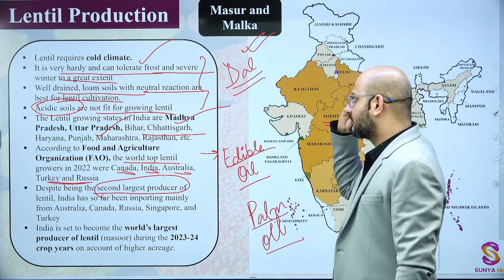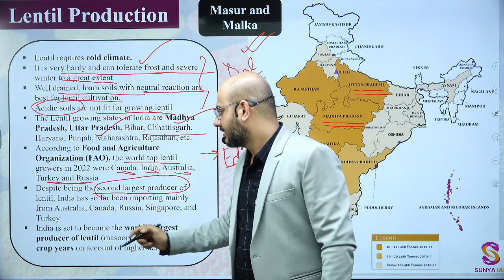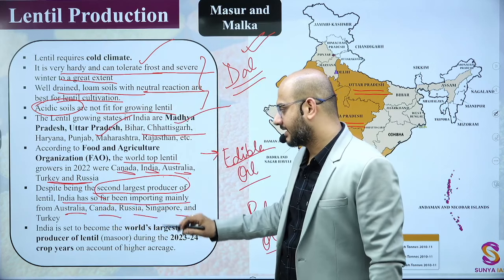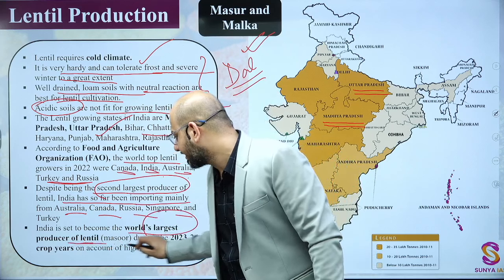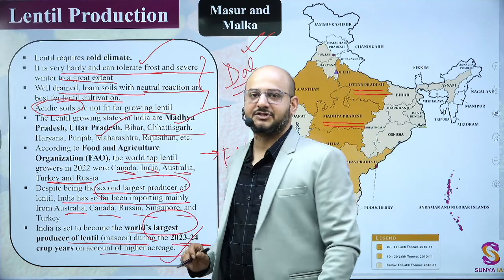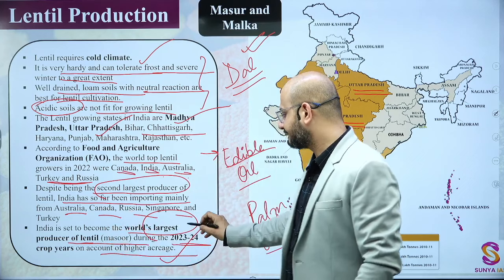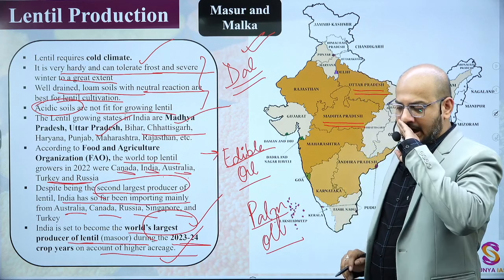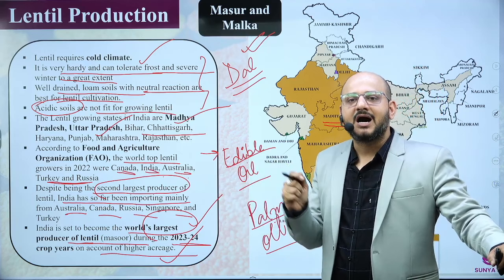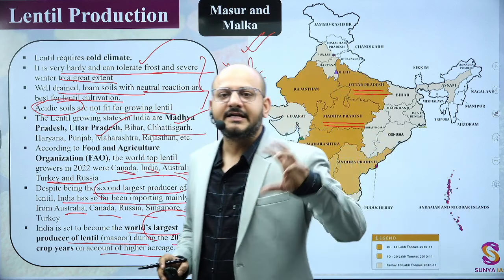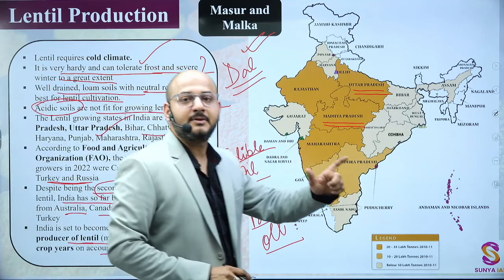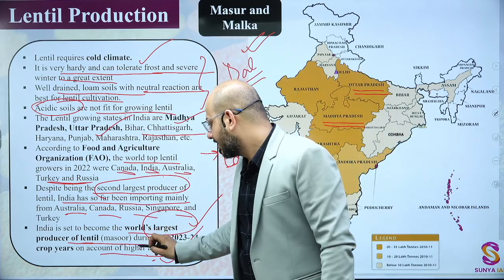Top Indian lentil-producing states include MP, UP, Bihar, Chhattisgarh, Haryana, Punjab, Maharashtra, and Rajasthan. As per FAO, the world's top lentil growers are Canada (number one), India, Australia, Turkey, and Russia. Despite being the second-largest producer, India is still importing lentils — that is a problem. India is said to become the world's largest producer of lentil (masoor) during the 2023-24 crop year on account of higher acreage. UPSC will ask these questions before India achieves that rank.